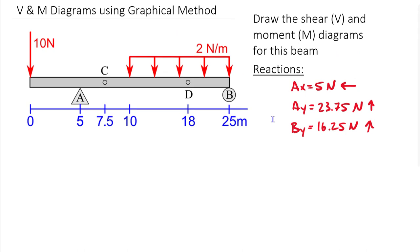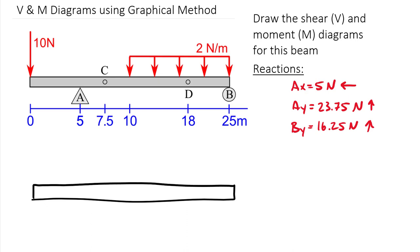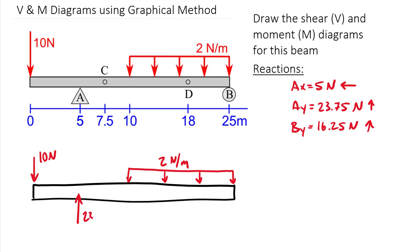Using the graphical method — and really it doesn't matter what method you use — you need a true loading free body diagram. I'm going to draw it right below here, keeping everything stacked on top of each other. External forces: 10 newtons on the left, the 2 N/m distributed load, a support force at A of 23.75 newtons, and a vertical force at B of 16.25 newtons.